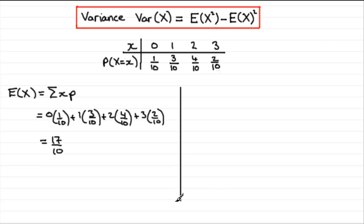E(x²) is equal to the sum of the squares of the observed values times their probability. So in other words, for this table, what we do is 0² times its corresponding probability, 1/10, and then we do the same for the other ones: 1² times 3/10 plus 2² times 4/10.